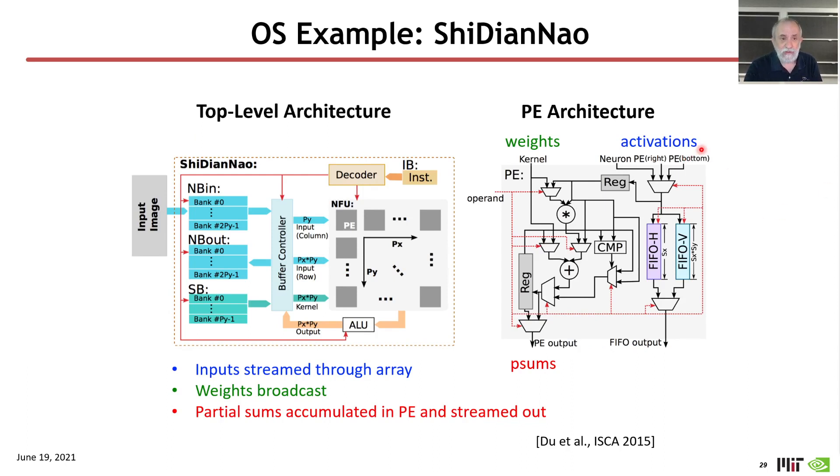the SheDianNao dataflow is an output stationary dataflow, where there is a register here, which is holding the partial sum where the accumulations are happening. So, again, you are sending weights out to the different PEs, and the activations have this flow where they come into a PE, and they're processed with the proper timing and sent out to the next PE. So, this was to point out that we can use a loop nest representation to actually be able to describe the basic scheduling of activities in a variety of dataflow accelerator architectures.